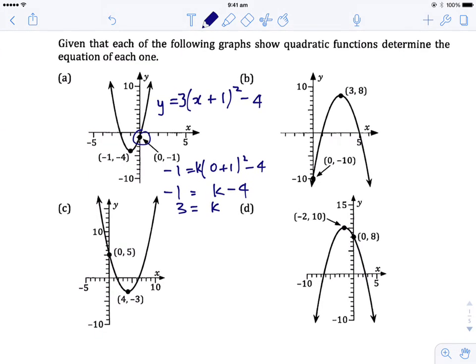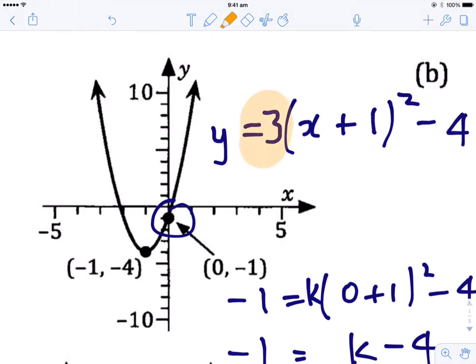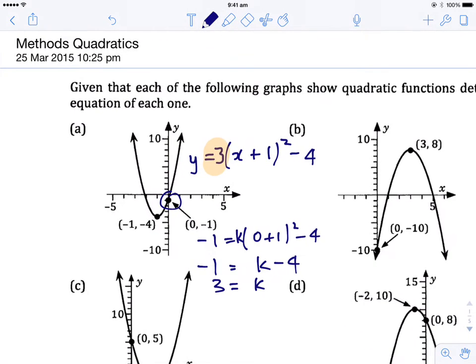Each one of these questions, I could do the exact same thing. So given the turning point, write it in that completed the square form and then just adjust this number at the front here so that you get the correct y-intercept.